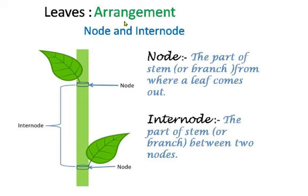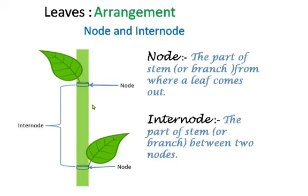To understand the different arrangements of leaves, we have to understand what is a node and what is an internode. See here in this figure — a leaf is coming out from this part, so this part of the stem is called a node. Here also a leaf is coming out, so this will also be called a node.